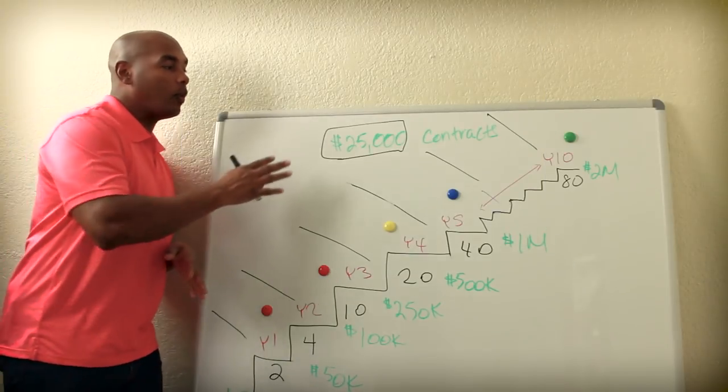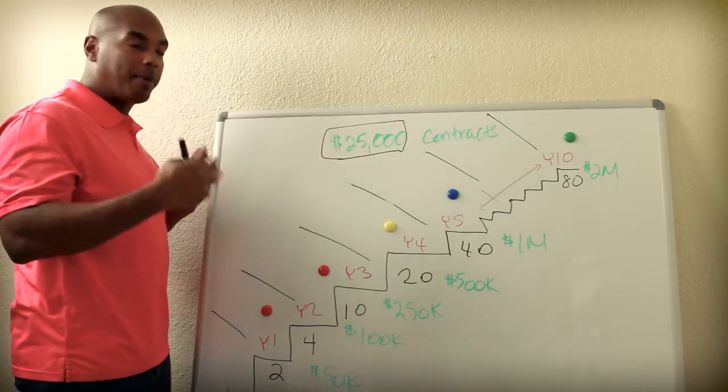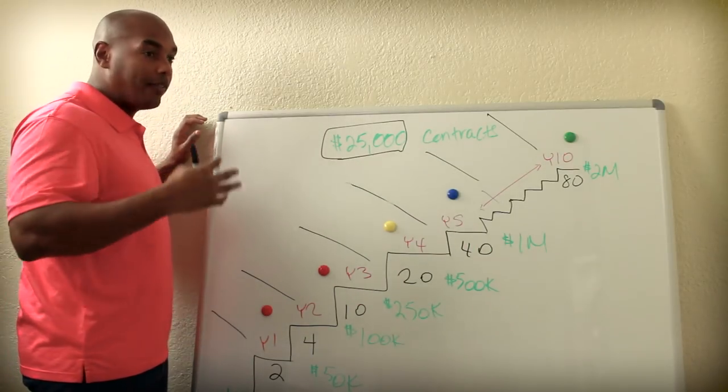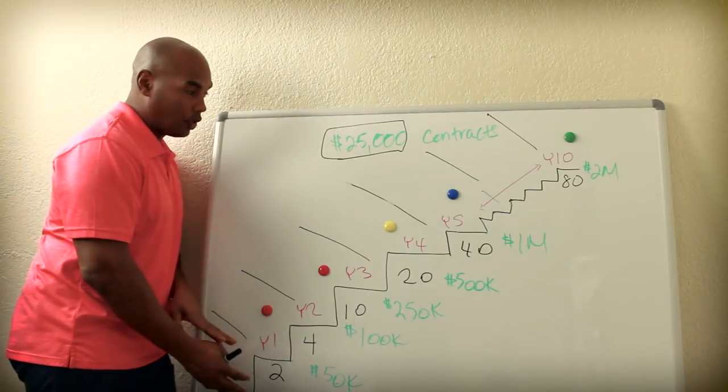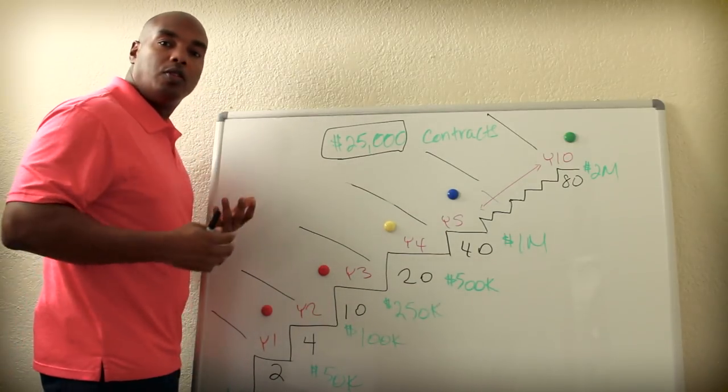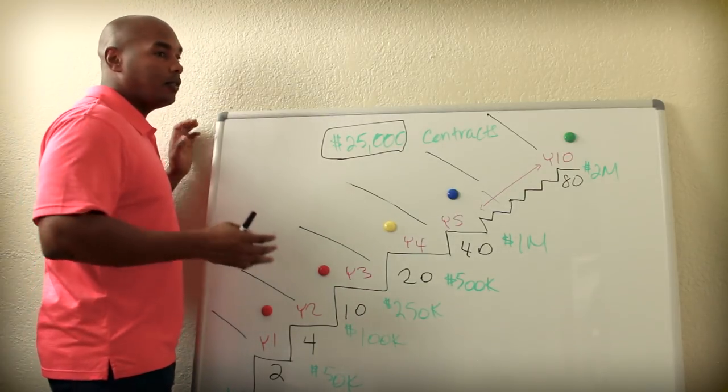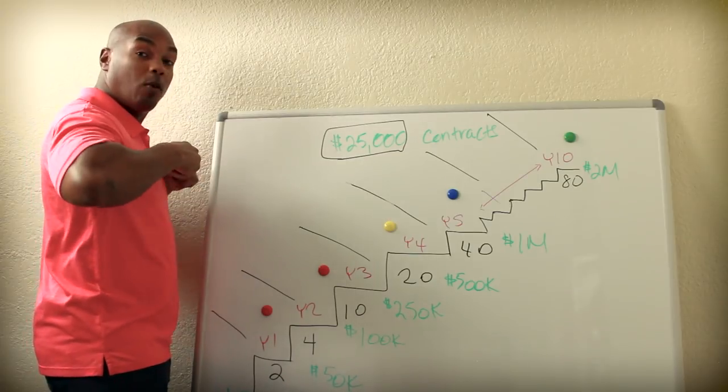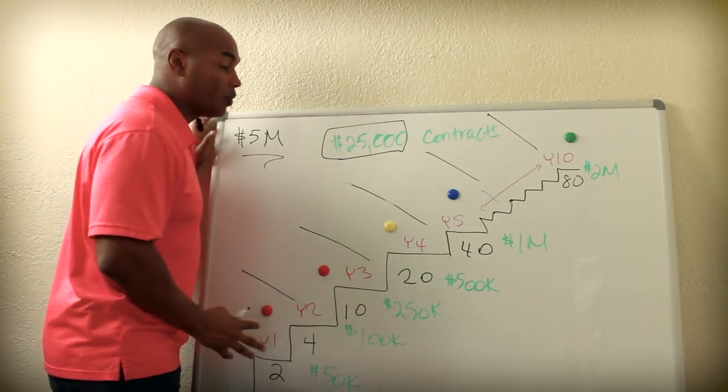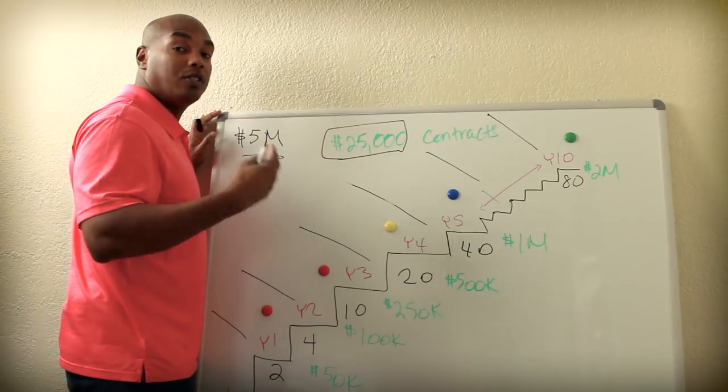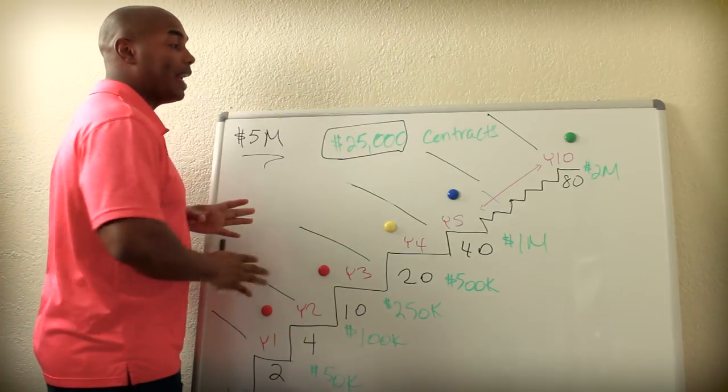We're at the whiteboard. The reason we're here is because I want to show you a visual example. When people talk about growing organically, this is what they think of in their mind. This is what we've all been programmed to believe is the way to successfully grow a business. You start small, you grow up here to the top, you take your time. That's wonderful, that's fine and dandy.